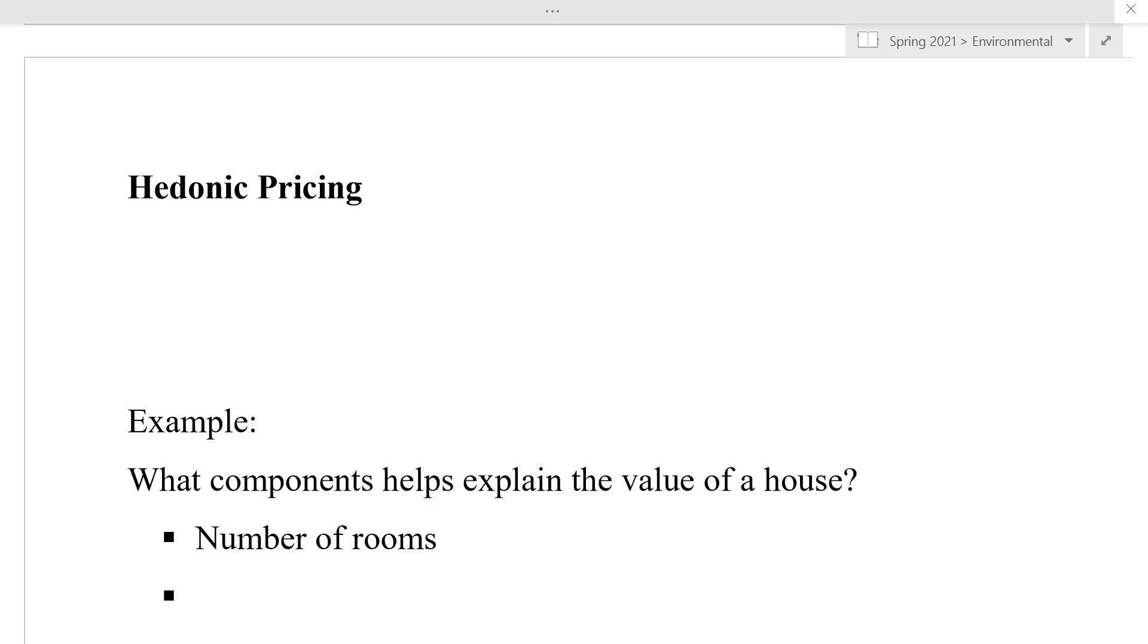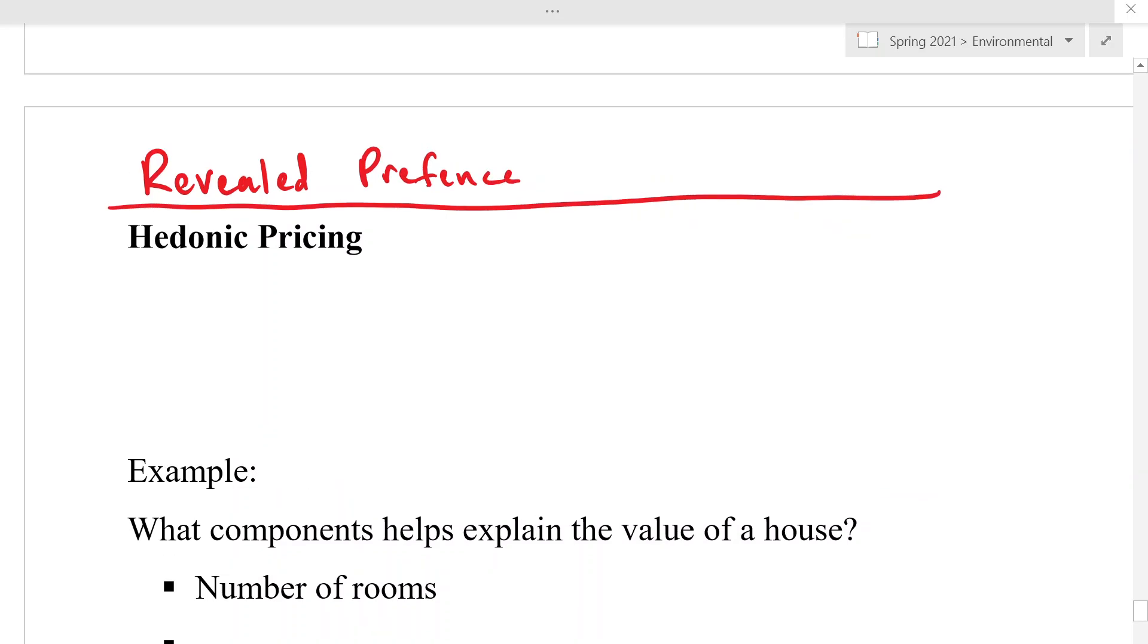Hedonic pricing is a very interesting, it's another revealed preference technique. So again, these are valuation techniques based on people's actual market behavior. So even though we might be talking about a non-market, non-priced good, like air quality or a national park or something like that, we can still examine people's market behaviors that are related to that good. And so hedonic pricing, this is the use of statistical analysis to explain the price of a good or service as a function of several components.